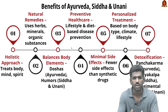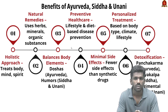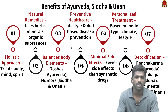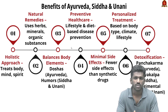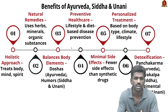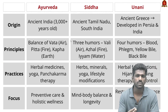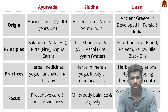Ayurveda is one of the oldest medical systems in the world, originating in India around 3,000 years ago. The word Ayurveda means 'science of life.' It focuses on balancing body, mind, and spirit through the three doshas: Vata (air and space), Pitta (fire and water), and Kapha (earth and water). Each person has a unique combination of these doshas. Treatments include herbal medicine, dietary guidelines, yoga, and therapies like Panchakarma.